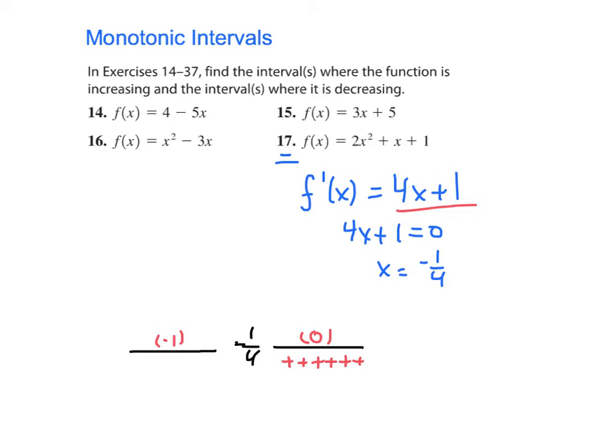So I indicate that with positive signs. If it's positive anywhere in this interval, then it's positive everywhere. Because if it changed back to negative, it would have crossed 0. Let's do the same thing with negative 1. If I plug negative 1 into my derivative, I get negative 4 plus 1, which is negative 3. And that tells me that everywhere to the left of negative 1 fourth is going to have a negative first derivative.